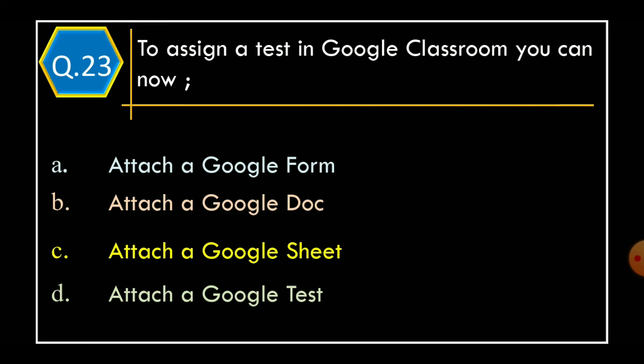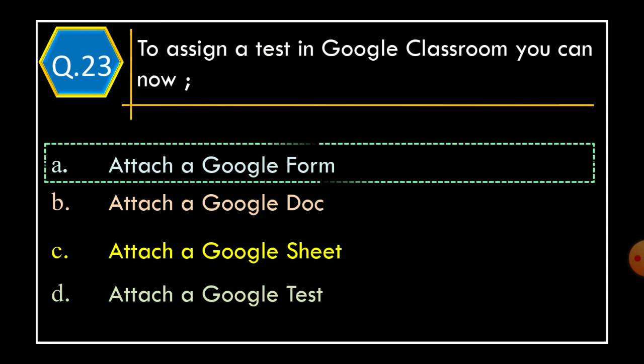Question 23: To assign a test in Google Classroom, you can now — Option A: Attach a Google Form, Option B: Attach a Google Docs, Option C: Attach a Google Sheet, Option D: Attach a Google Test. And correct option is Option A: Attach a Google Form.